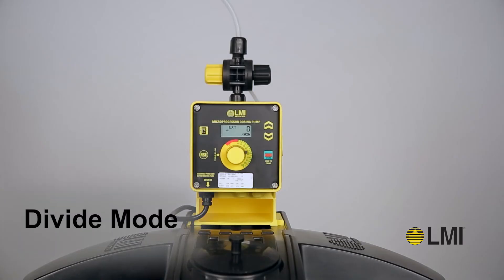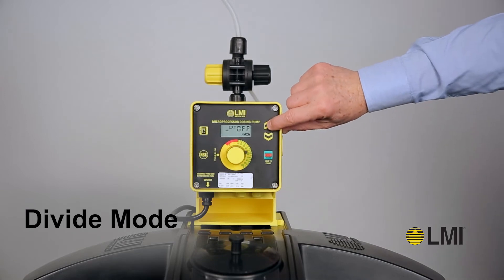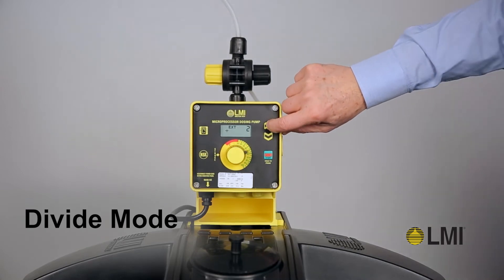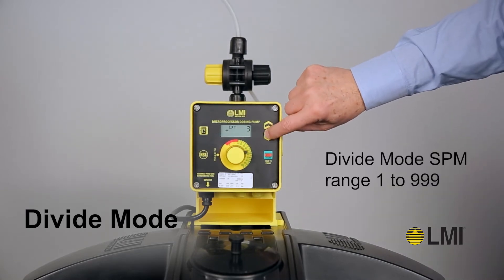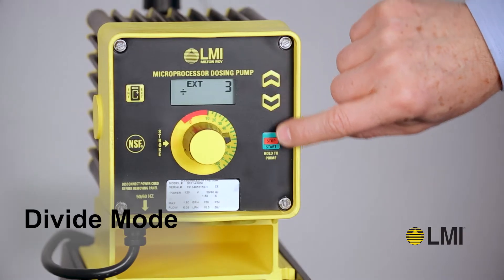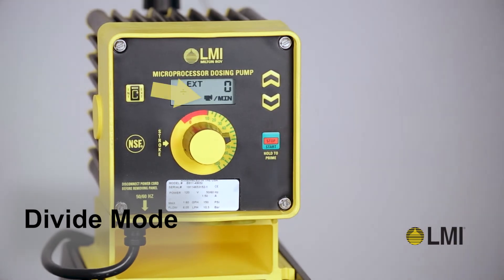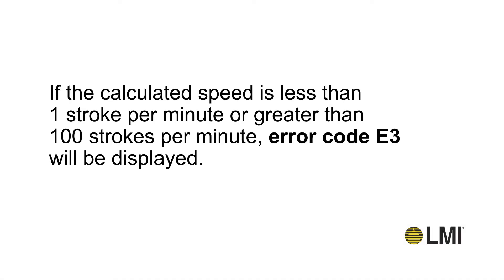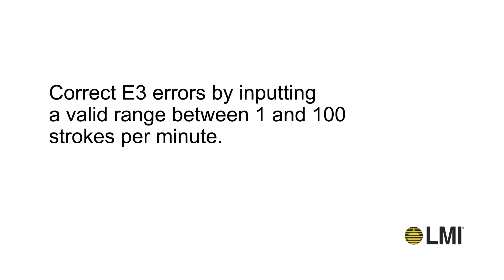When in Divide mode, use the Up and Down keys to change the value. The range in Divide mode is from 1 to 999. Press the Start-Stop key to start the pump — the pump symbol appears on the screen. The pump is now ready to receive external signals. If the calculated speed is less than 1 stroke per minute or greater than 100 strokes per minute, an E3 error code will be displayed. Correct E3 errors by inputting a valid range between 1 and 100 strokes per minute.